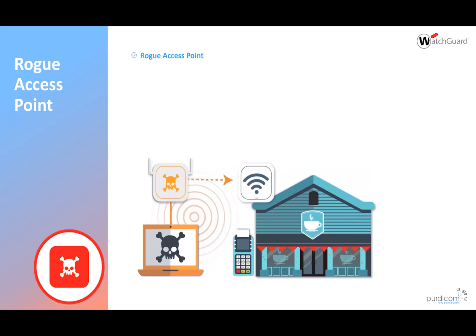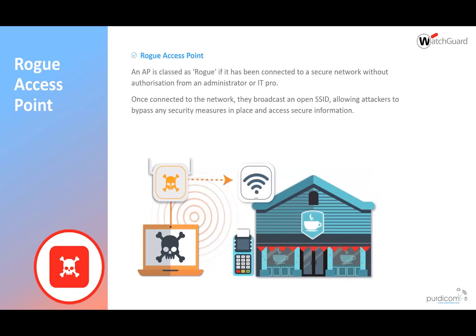Rogue access points are definitely increasing. This is where people may plug in a small USB thumb drive or a USB-battery-powered rogue access point, or take an old access point from home and plug it into the local network. It can transmit a hidden SSID that only the attacker knows. I've found this in schools where kids are now using BT home hubs and plugging into school networks to bypass security.